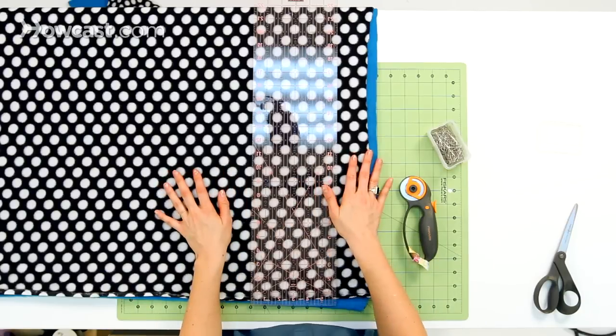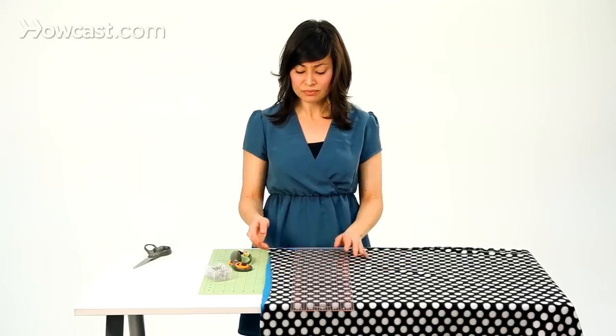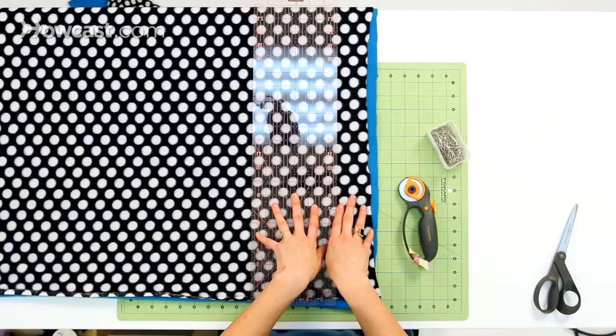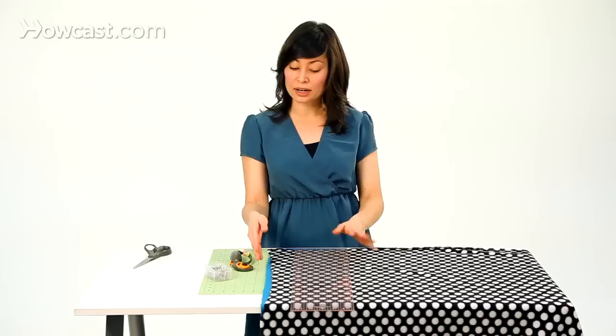So to do that, you can just lay out your blanket on a large table, and you can see here we're a little off. Our black and white polka dot fabric is a little bit smaller than our lip fabric, and that's okay.